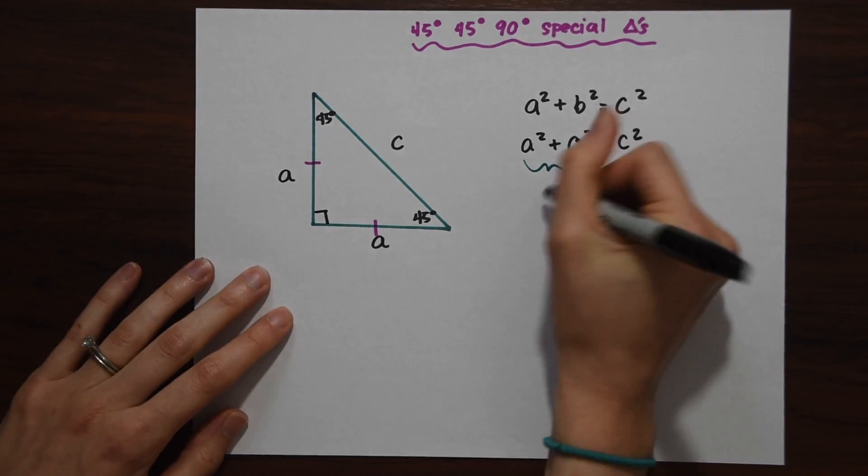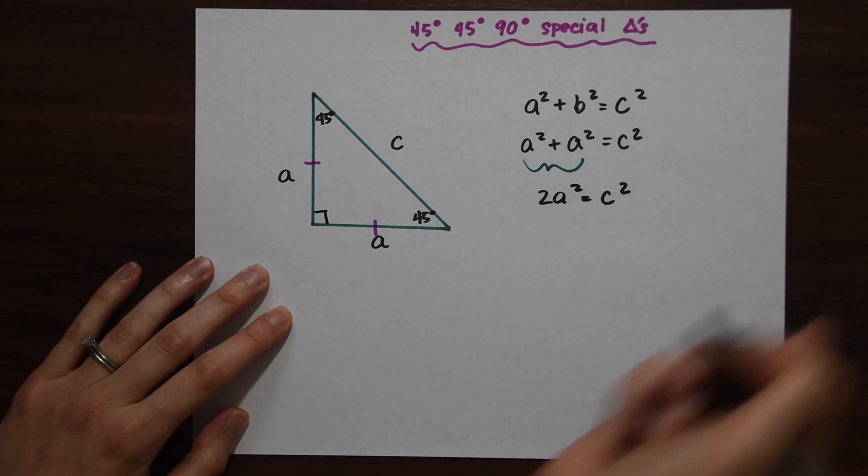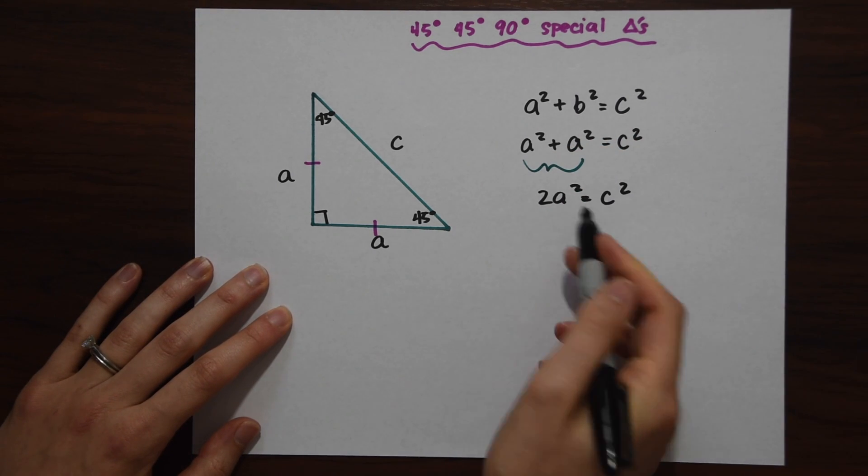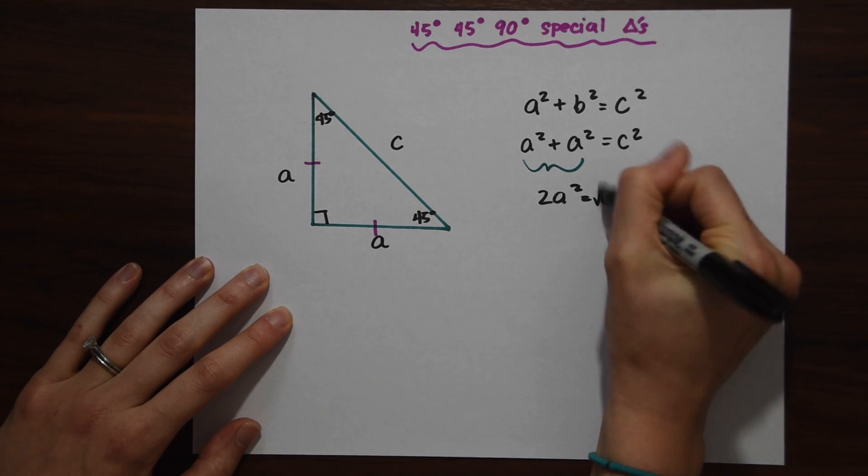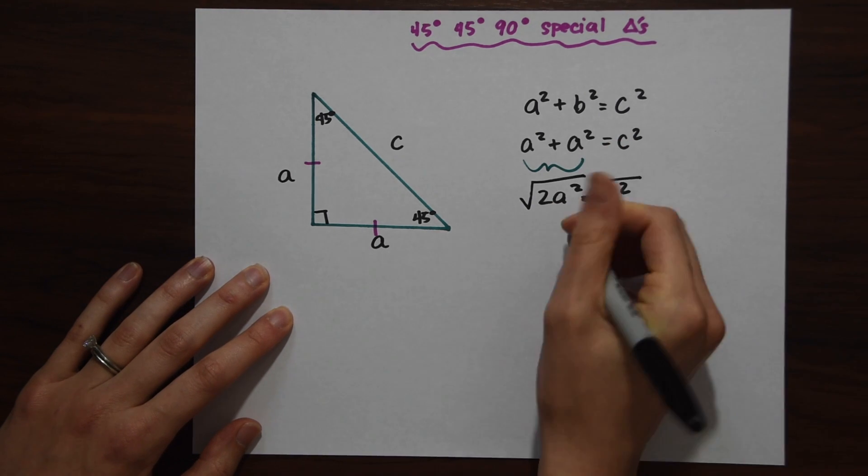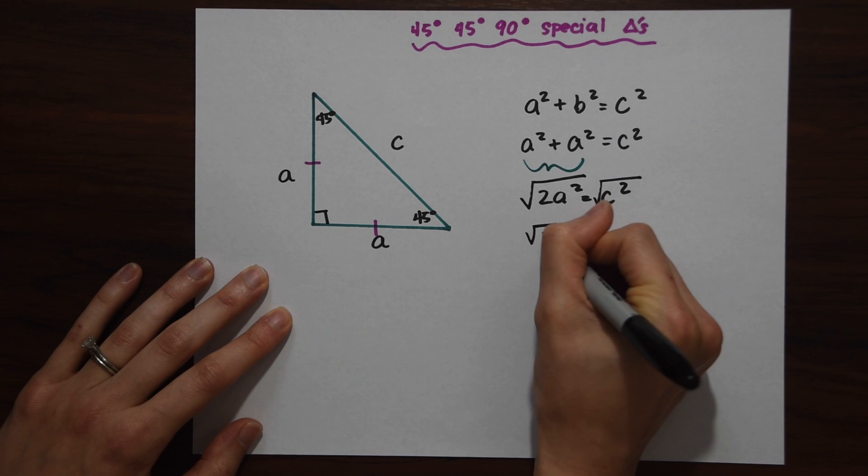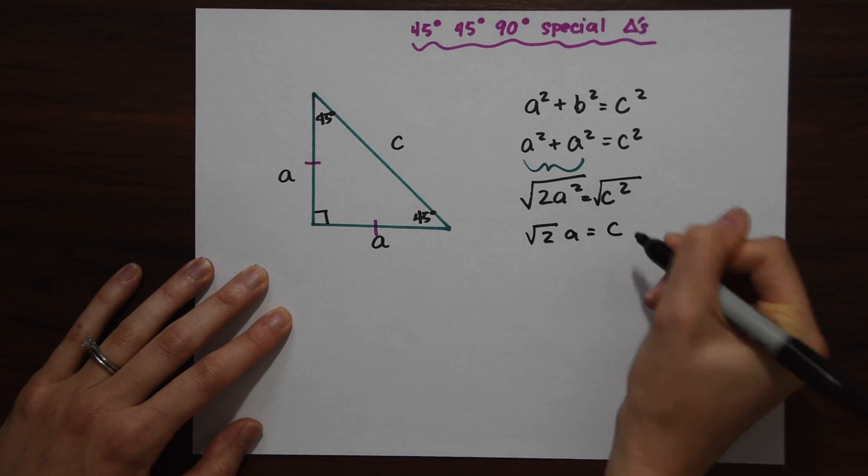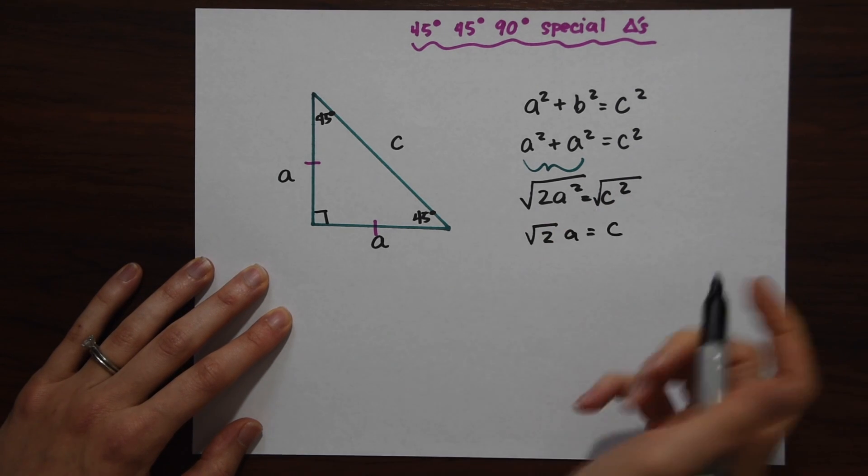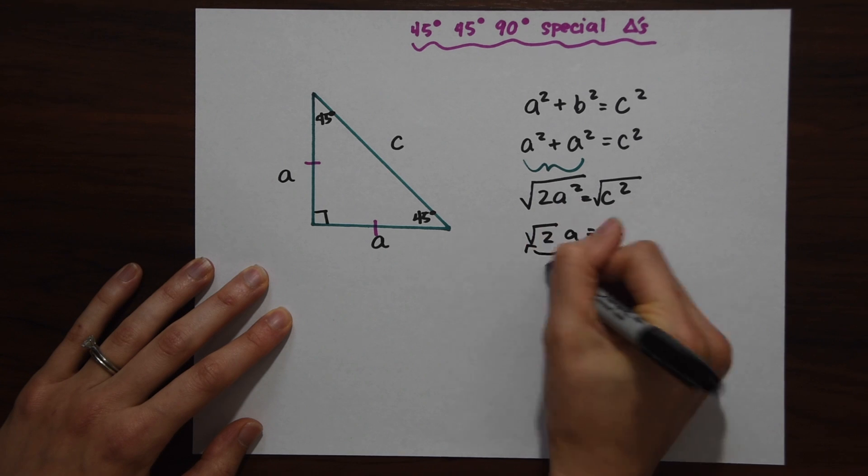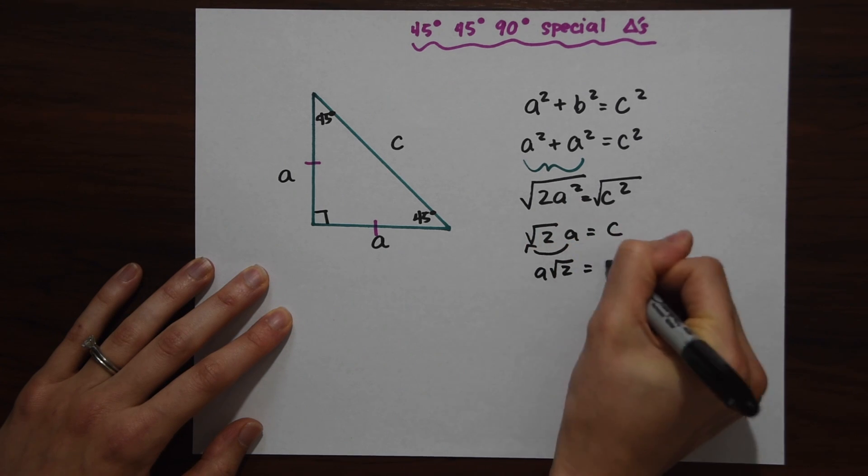This becomes 2a squared equals c squared. We want to find the value of c, so we're just going to take the square root of both sides. When we do that, we get radical 2a equals c, or another way to think about this is to move that a to the other side and we get a radical 2 equals c.